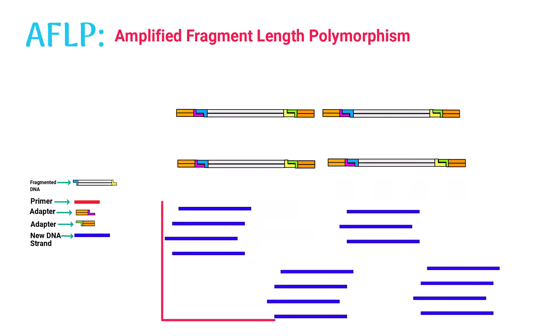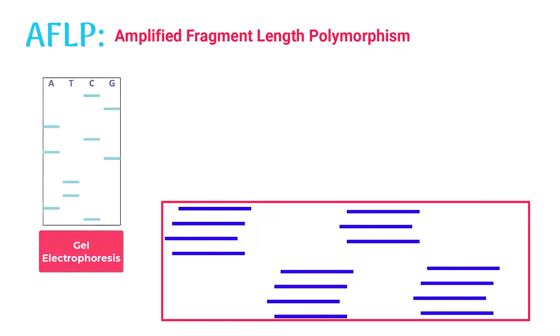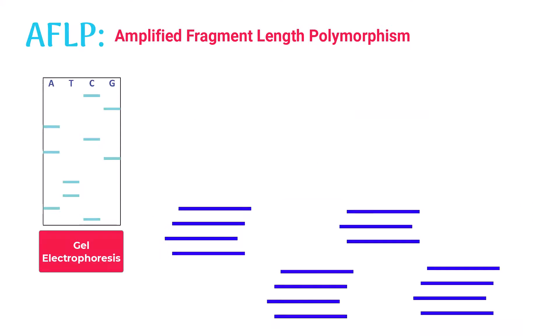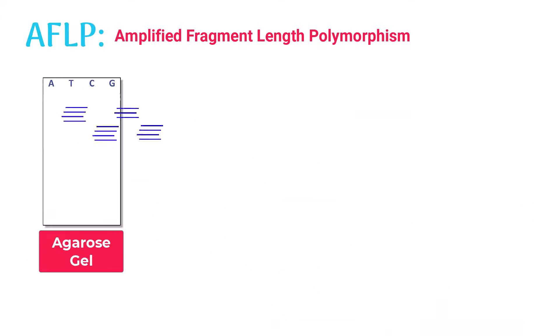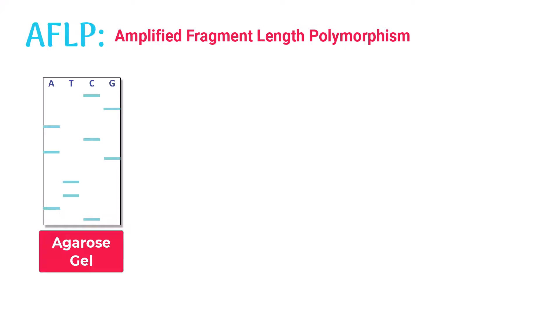These amplified fragments are easily separated in polyacrylamide gel electrophoresis. The DNA fragments are placed in a gel, then an electric field is applied, and the fragments get separated based on their size.